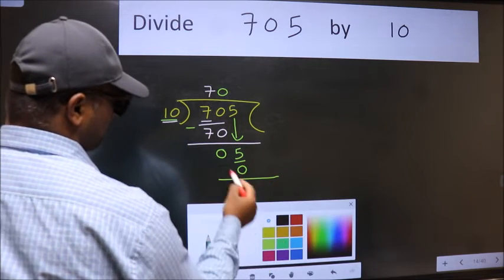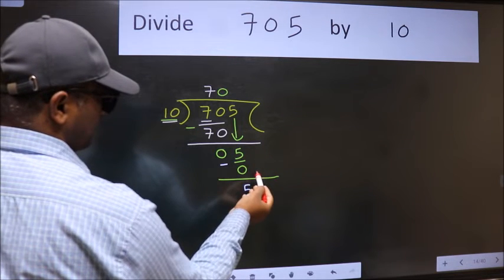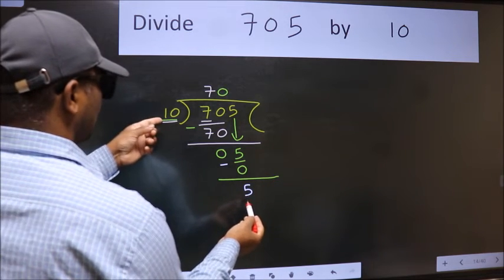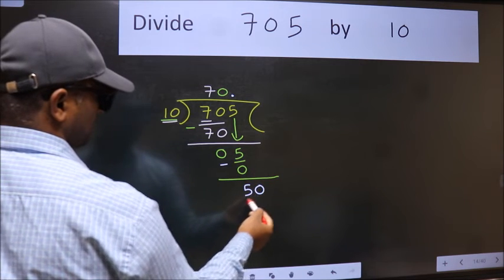Now we subtract, we get 5. Over here, we did not bring any number down. And 5 is smaller than 10. So now we can put dot and take 0. So 50.